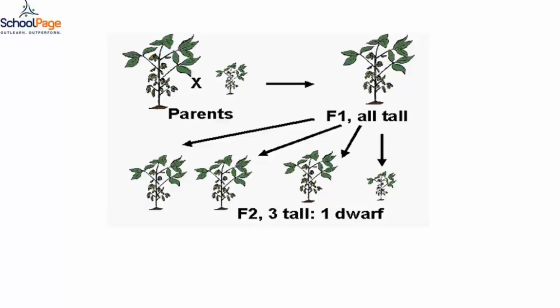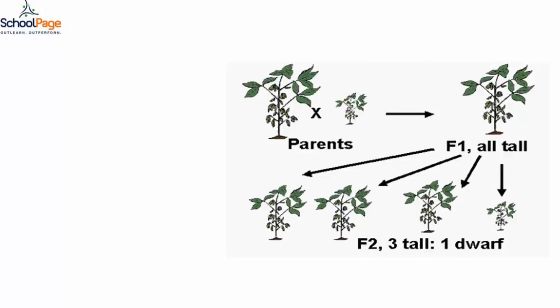The F1 plants were in a heterozygous condition, carrying both the gene for tallness and the gene for dwarfness. The F2 cross produced a phenotypic ratio of 3:1 — for every three tall plants, there was one dwarf plant. This was obtained by crossing the two hybrids of the F1 generation.